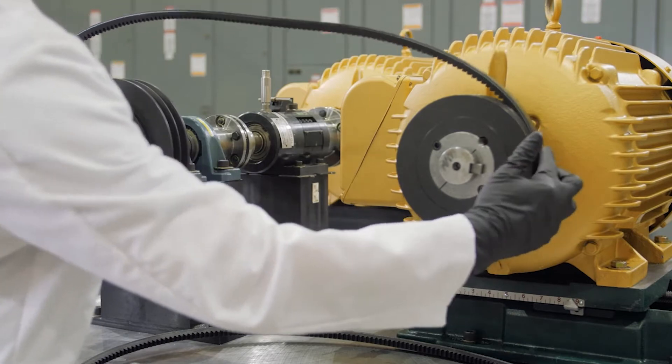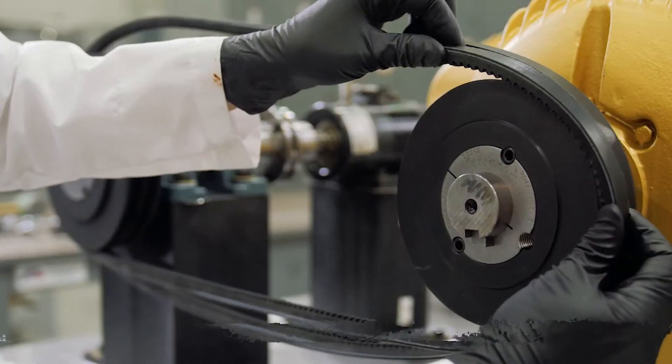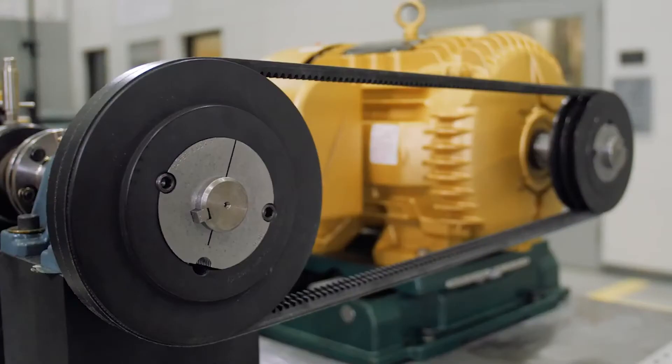Adjust the center distance as needed so that the belts can be loosely installed in the shivs, and then adjust the center distance outwards to the approximate final distance.